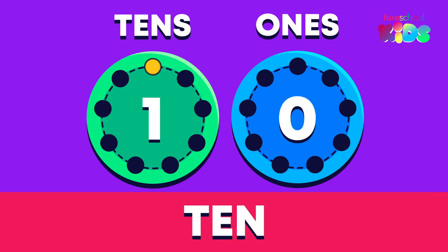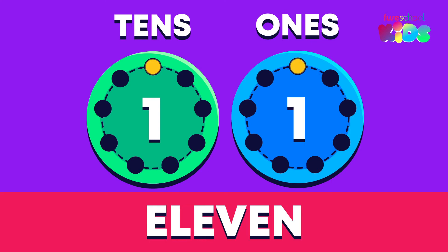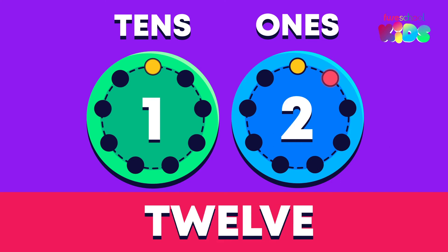Let's keep counting. What comes after ten? Eleven. We have one ten and one one. Twelve. One ten and two ones.